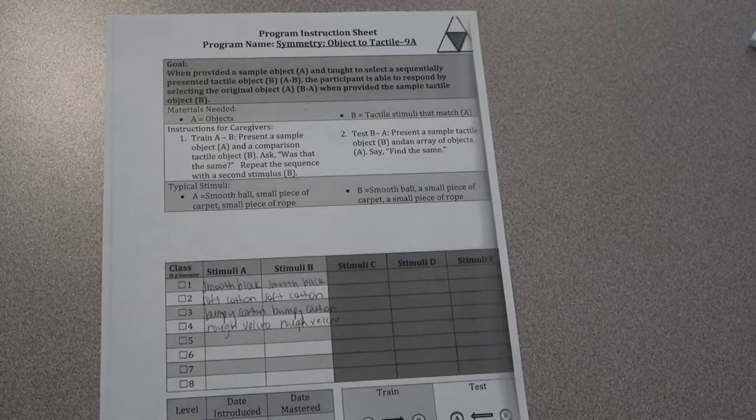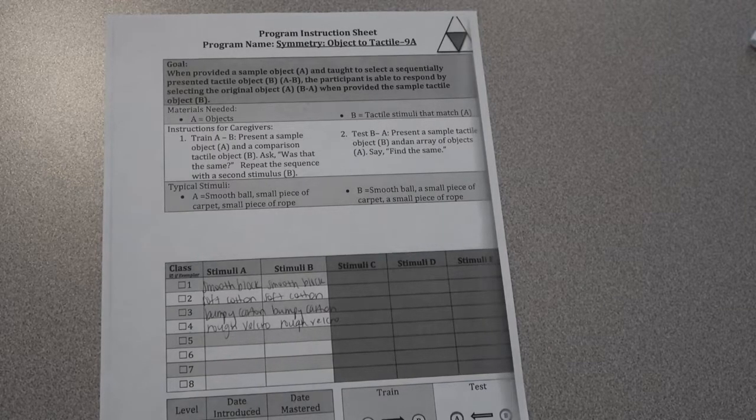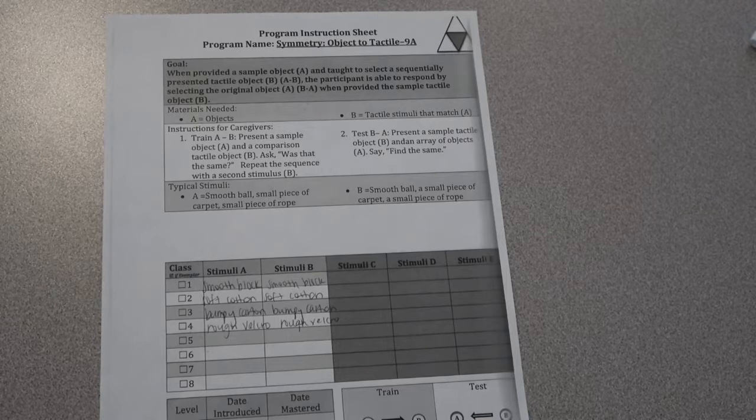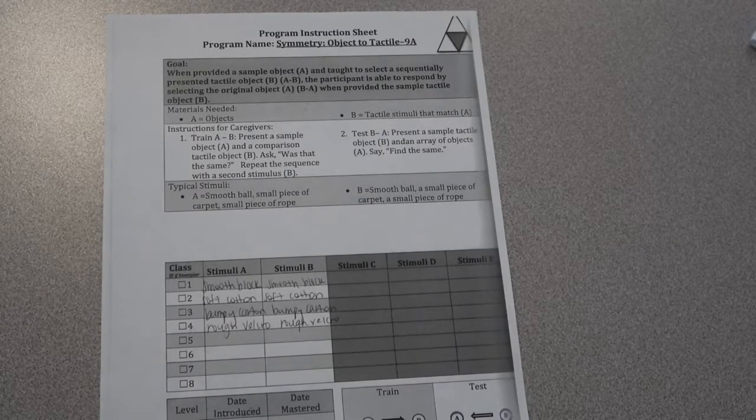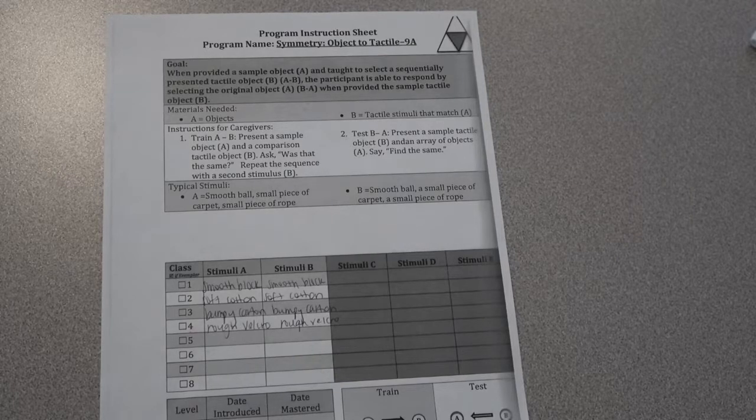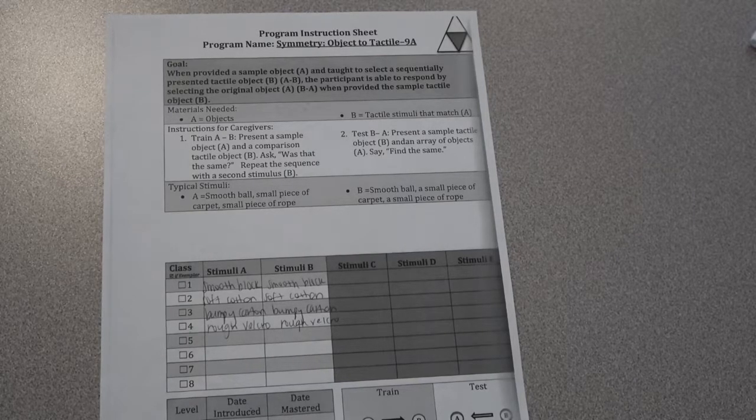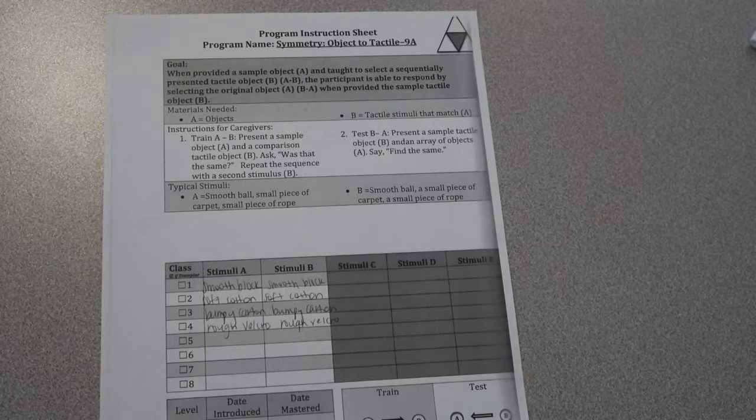For tests, you're doing B to A where you're presenting the sample tactile object just like you are in train, but the difference is you're going to add the array of objects in the boxes out in front of them and have them feel in the boxes and find the same and potentially point to the box or somehow verify that they've found the same.